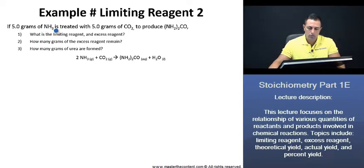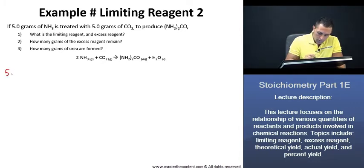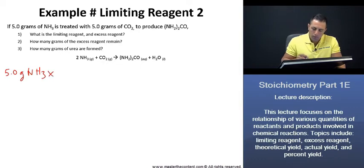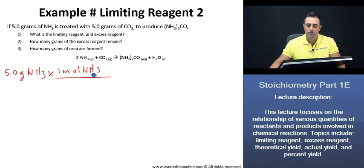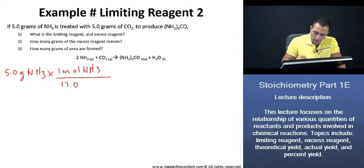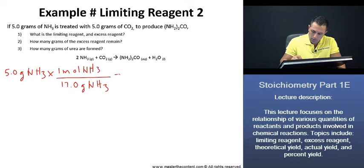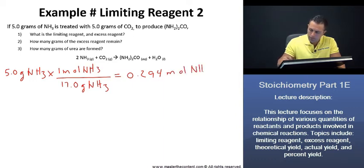Let's begin with ammonia. If we have 5 grams of our ammonia, we know that the molar mass for ammonia, rounded to one decimal place — which you can get directly from the periodic table — is going to be 14 for the nitrogen and 3 for the hydrogen, giving us 17 grams per mole. Should you require more information on how to find molar mass, we covered that earlier in this lecture series. Thus, once we equate the following, we end up with 0.294 moles of our ammonia.